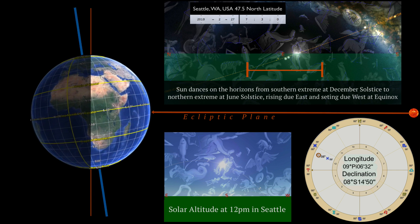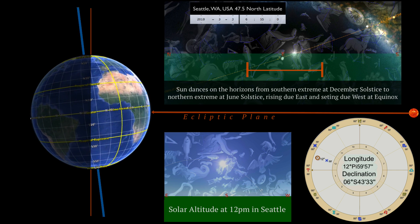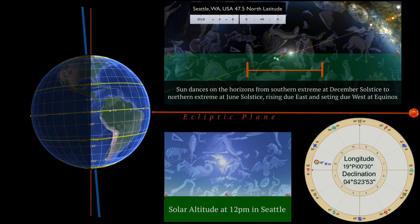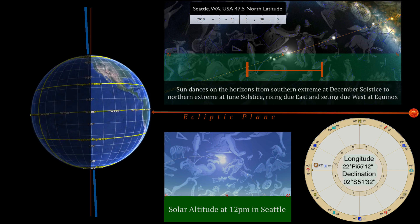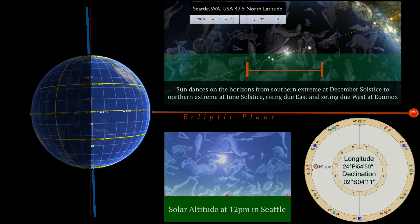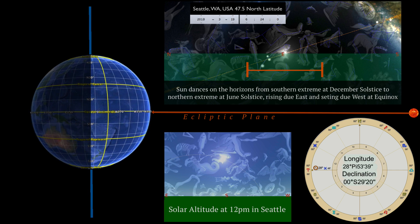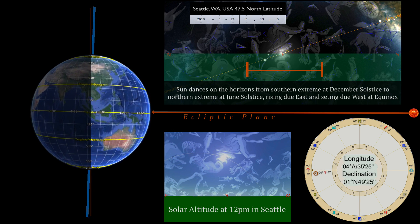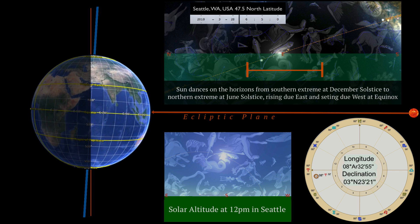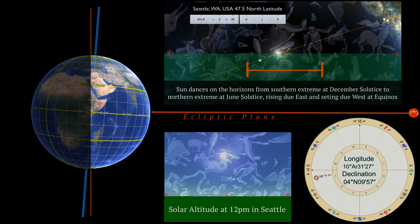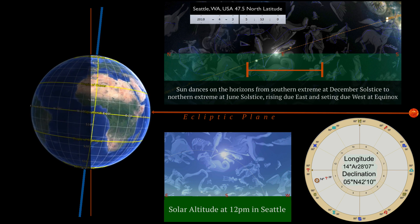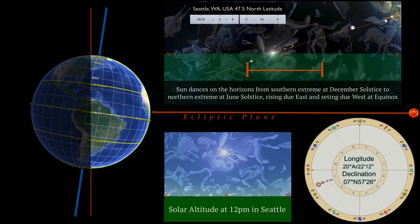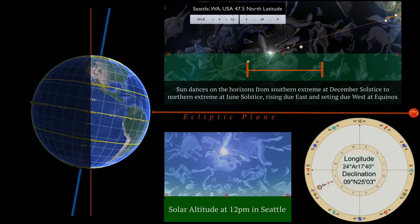At the bottom of the screen we'll track the solar altitude at 12 noon for Seattle, Washington. We'll see the Sun climb from its lowest altitude at December solstice to its greatest altitude at June solstice, then descend again.